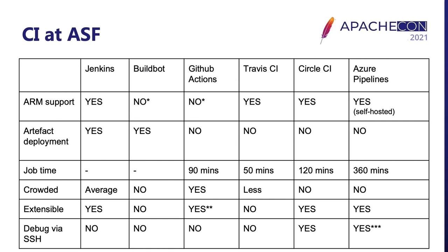With Buildbot, it's very easy to deploy build artifacts. Developers can specify the maximum amount of time for each build job. There are not many projects using Buildbot, so jobs execute quickly. The build configuration syntax is Python-like, allowing one to script almost anything. However, there is no way to connect to a Buildbot builder to debug issues. GitHub Actions is managed by GitHub at Microsoft, and the Apache Software Foundation is just a user there. There is no official way to run jobs on ARM64 because GitHub does not provide such hardware, but there is a way to execute jobs on a remote ARM64 Kubernetes cluster. At the moment, there is no easy way to copy build artifacts to Apache machines without compromising security.